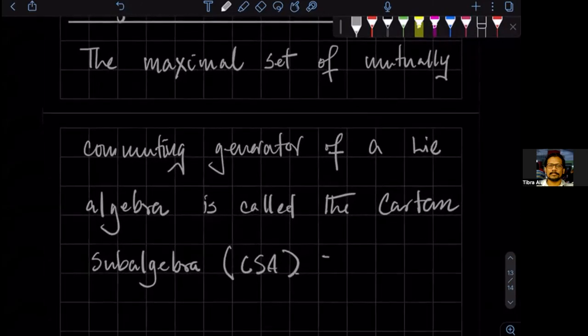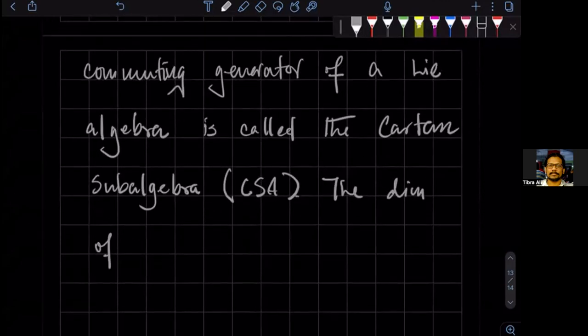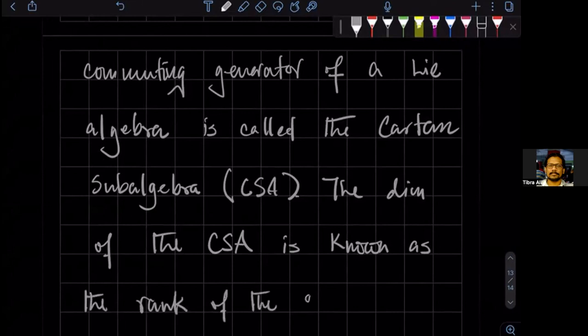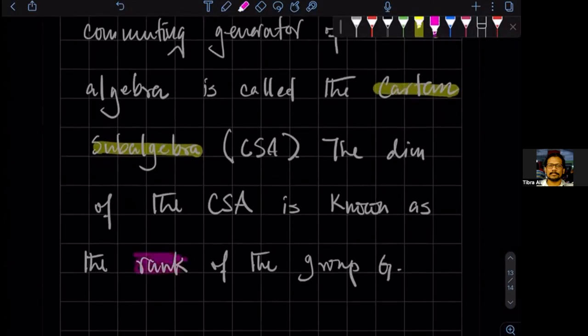And the dimension, or the number of generators of the Cartan subalgebra, is known as the rank of the group, of the Lie group. So we are defining two things: the Cartan subalgebra and the rank. Do we have any questions?